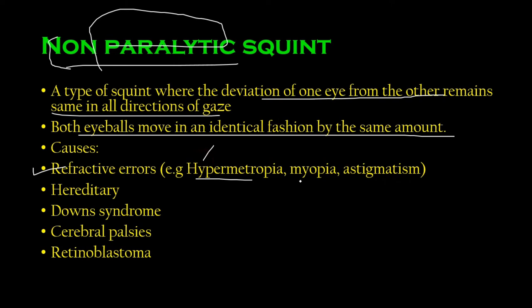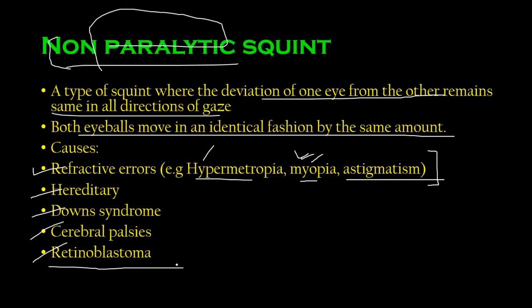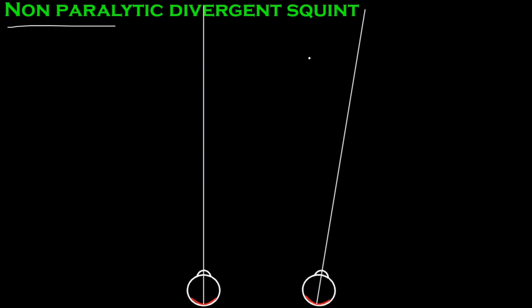What are the causes of a non-paralytic squint? Refractive errors such as hypermetropia (farsightedness), myopia (nearsightedness), and astigmatism — a problem in the cornea, also called a cylindrical refractive error. There are also hereditary causes. Down syndrome can cause a non-paralytic squint, cerebral palsy can cause squints, and retinoblastomas can also cause squints.